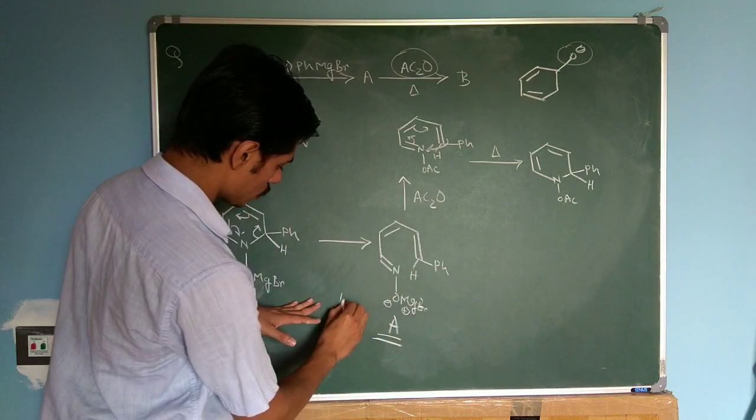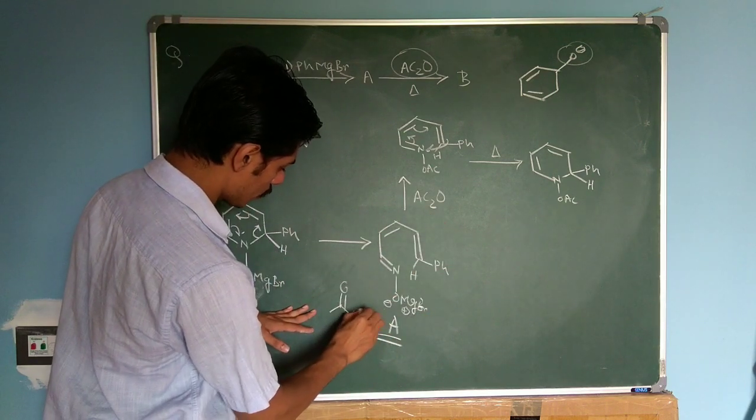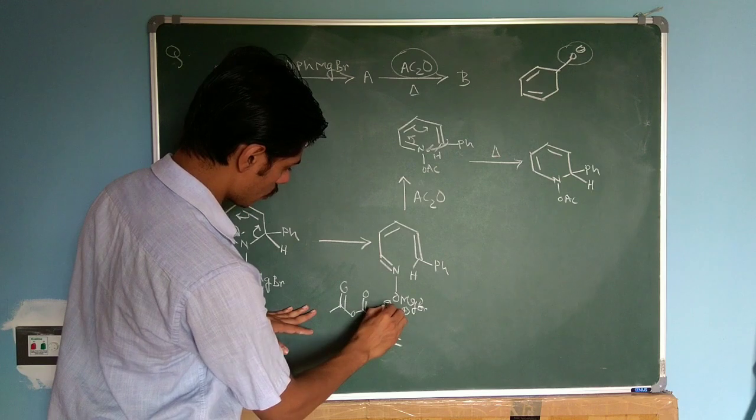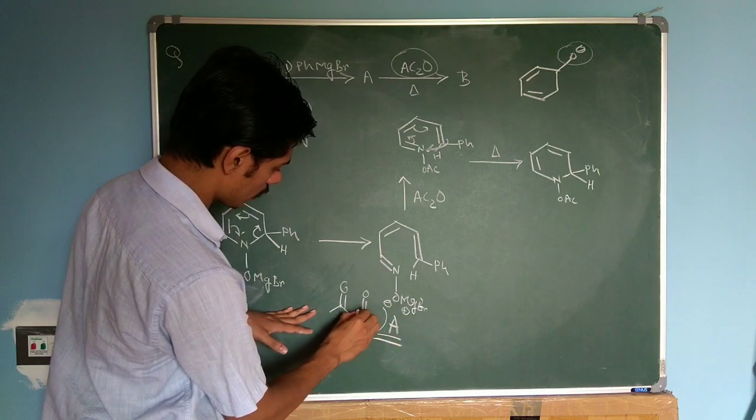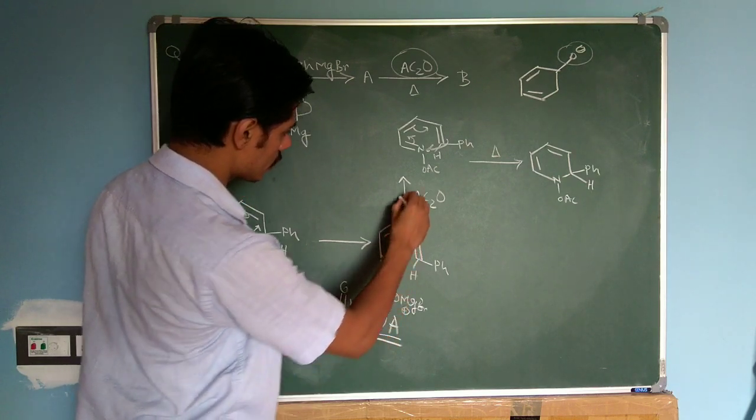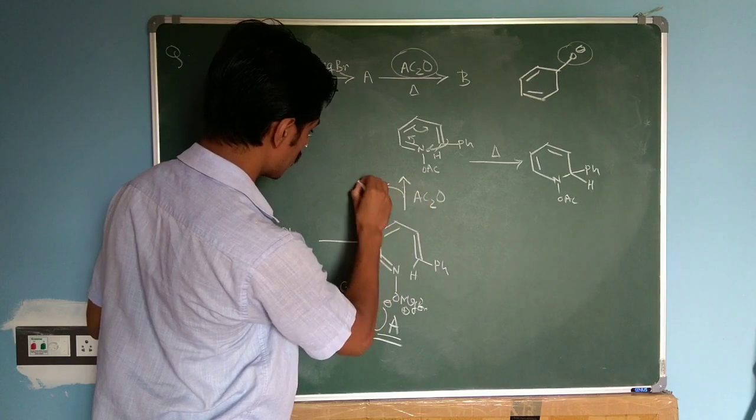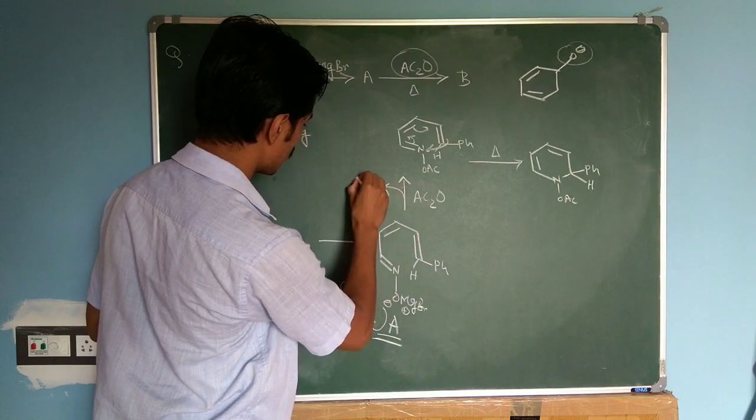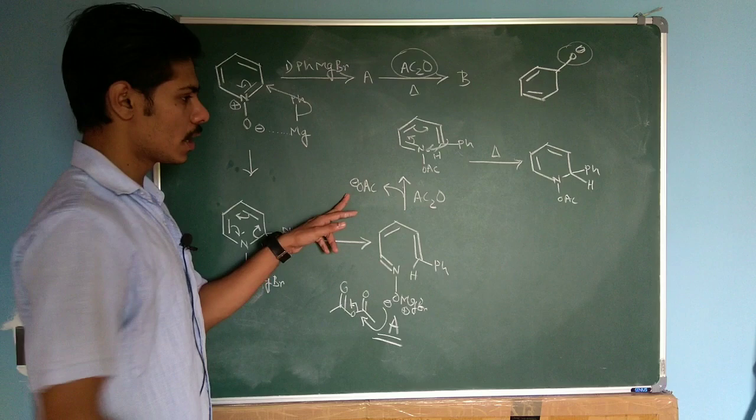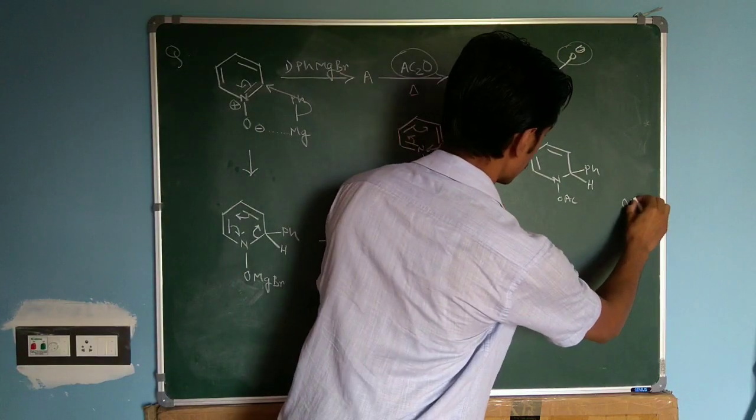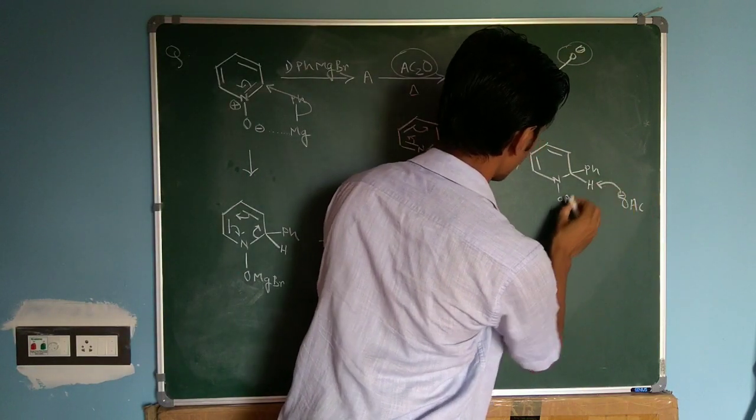And if you remember in this step when you have this acetic anhydride molecule over here, when this O minus will attack, the acetate molecule, this OAc minus will be removed. Now this OAc can take this proton.